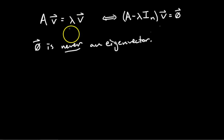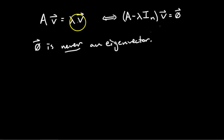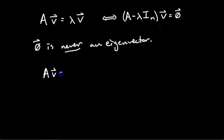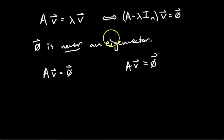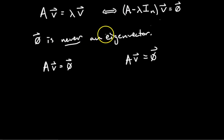Paradoxically though, lambda equals zero is a valid eigenvalue. If you input a vector V, multiply by A, and get zero times V, you get the zero vector out. Plugging lambda equals zero into both forms of the expression gives A times V equals the zero vector, which confirms the two expressions are equivalent. Bottom line: zero is never an eigenvector, but lambda equals zero could be an eigenvalue.